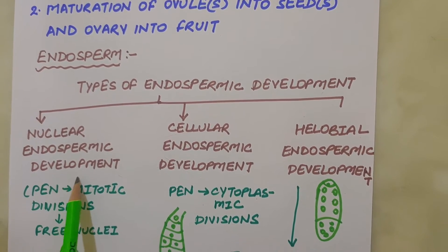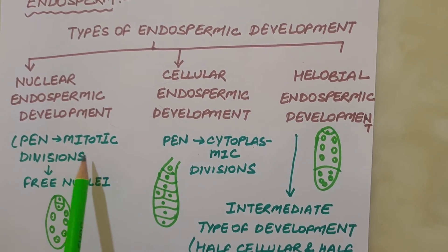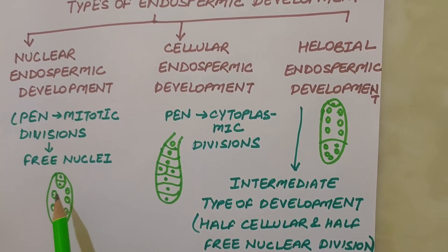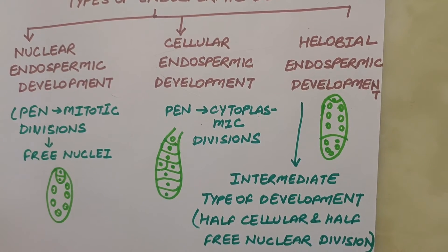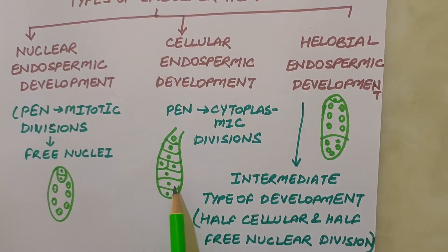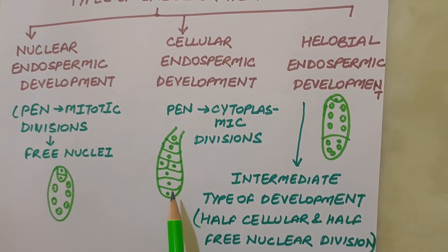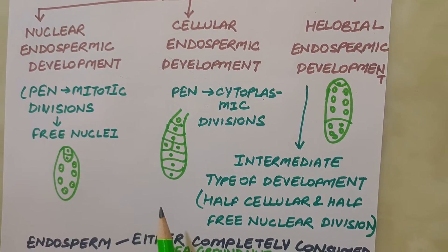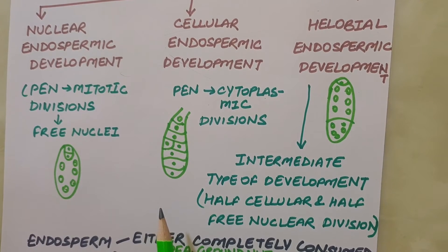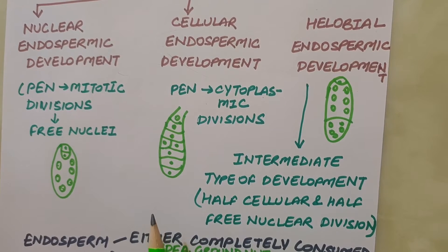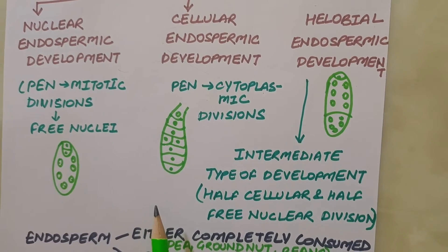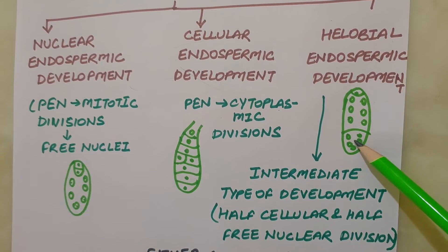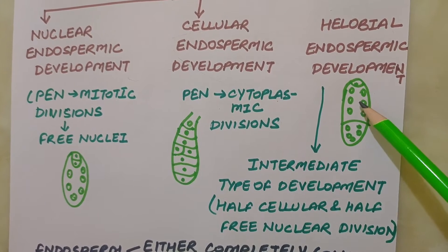In the most common type — nuclear endosperm development — the primary endosperm nucleus undergoes successive mitotic divisions to give rise to free nuclei; this stage is called free nuclear endosperm development. Subsequently, cell wall formation occurs and the endosperm becomes cellular. The coconut water from a tender coconut is nothing but free nuclear endosperm made up of thousands of nuclei, and the surrounding white kernel is cellular endosperm.